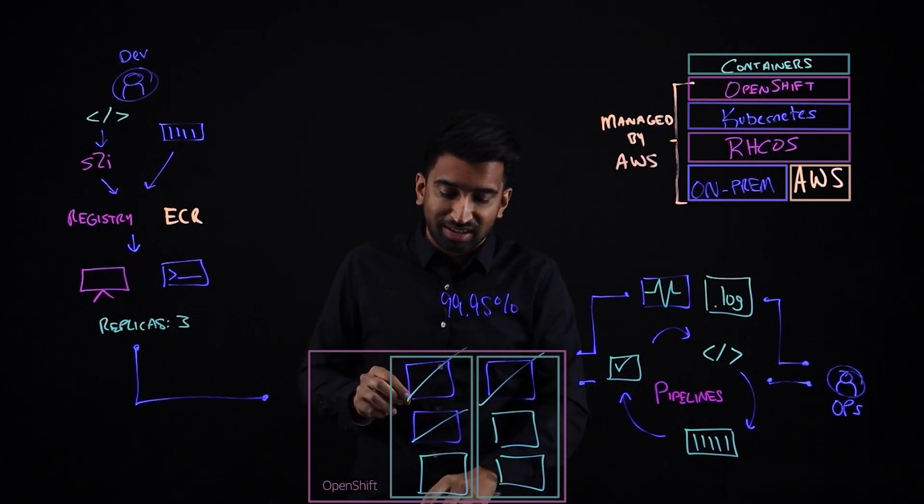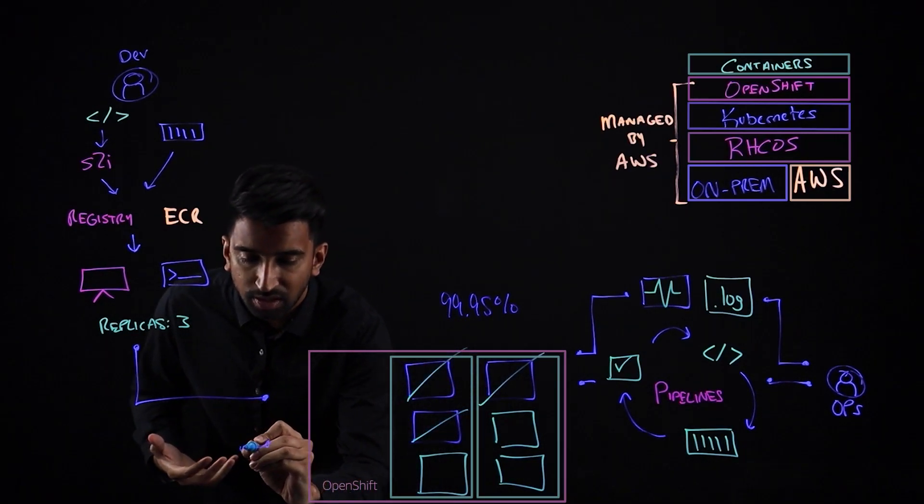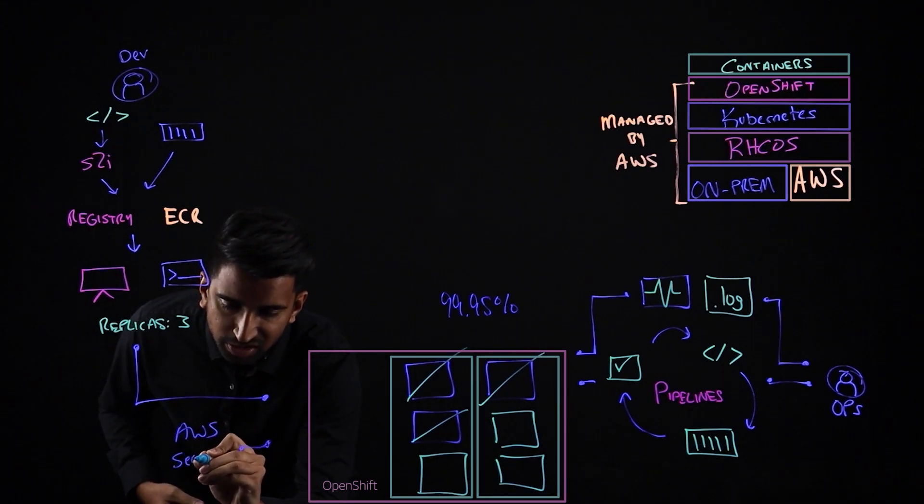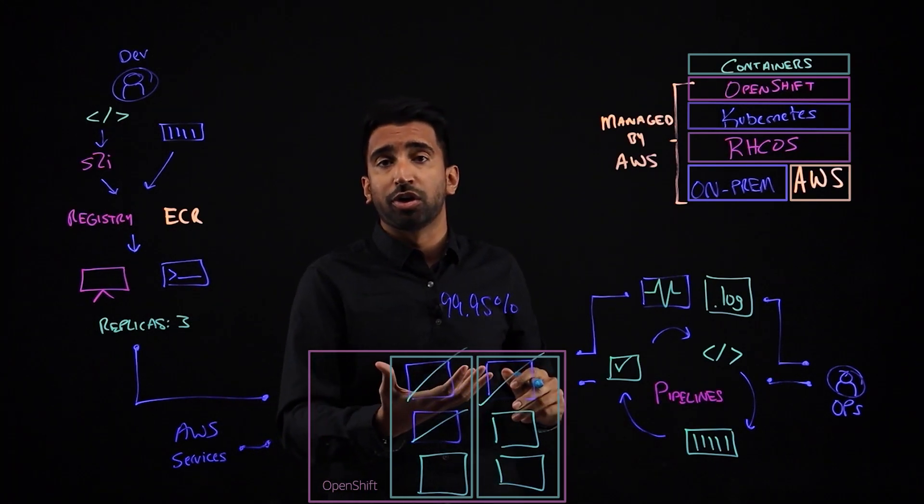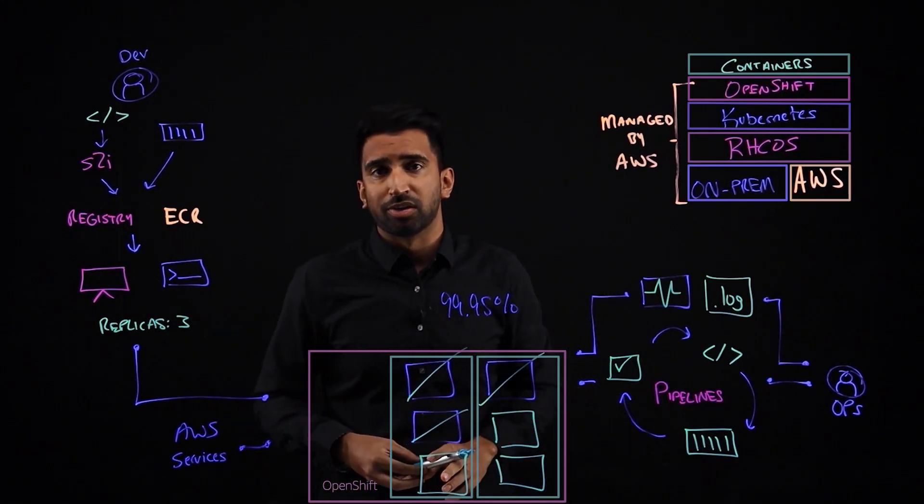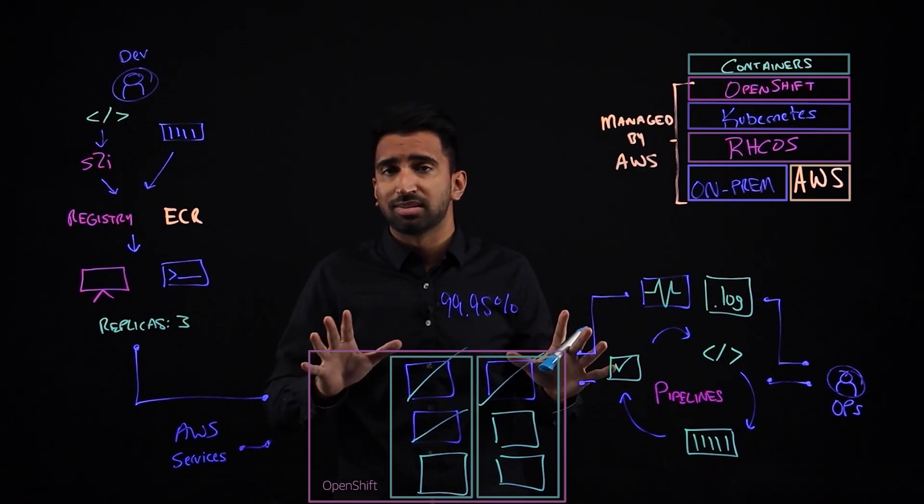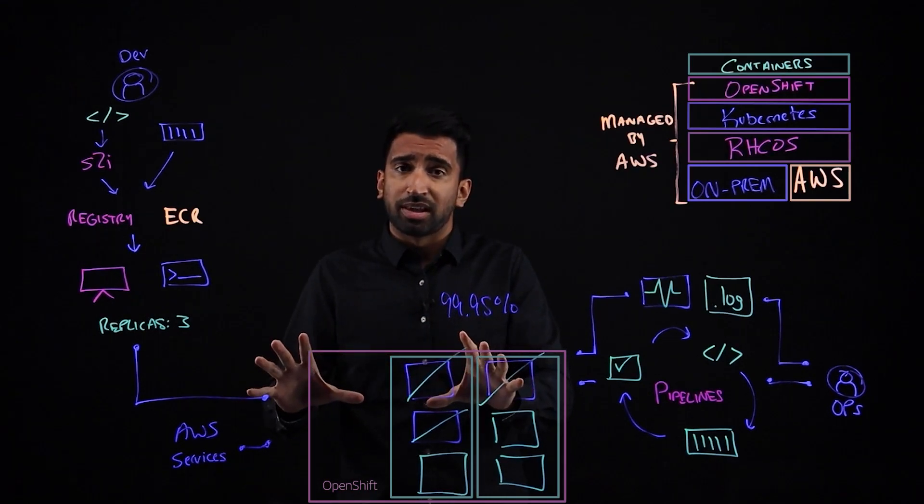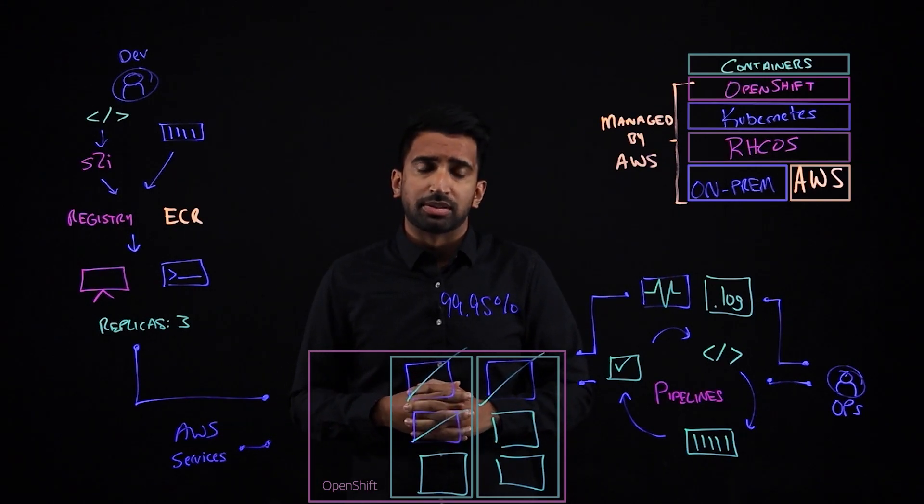In addition, you can really take advantage of native AWS services. That integration allows you to take advantage of things like, let's say SageMaker, if you want to add AI or ML to your workloads, your container workloads. Or let's do something simpler, something like S3 for storage requirements. That's simple storage service. Regardless, that integration layer is something that's very critical when you're using a managed service with AWS services.